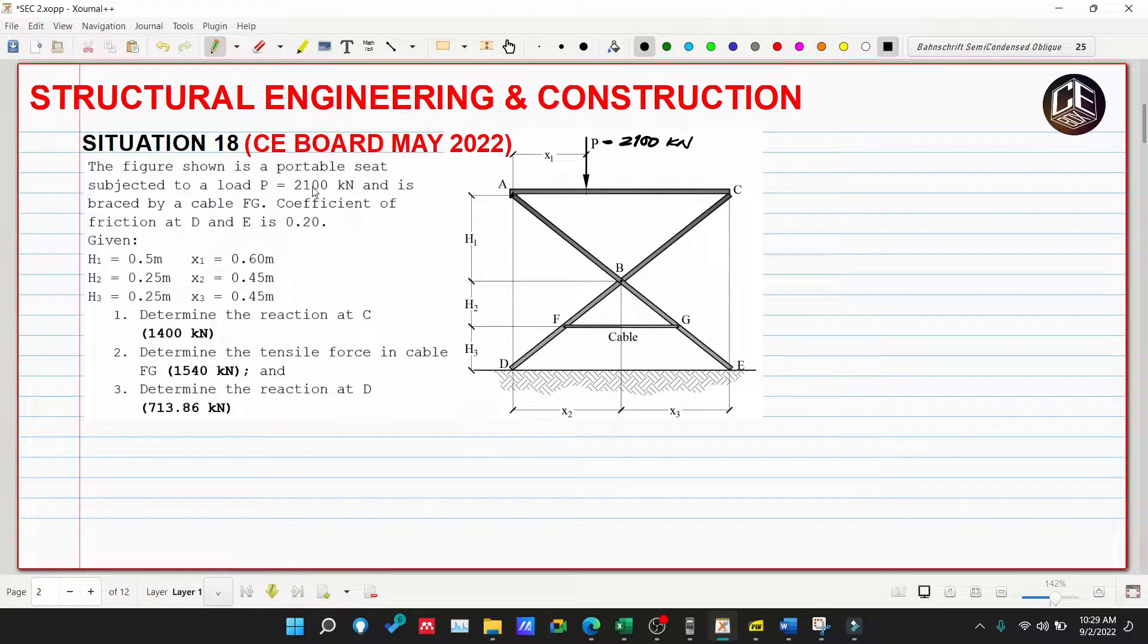The figure shown is a portable seat subjected to a load P which is equivalent to 2100 kN and is braced by a cable FG. Coefficient of friction at D and E is 0.20. Given: h1 is 0.5 meters, h2 is 0.25, h3 is 0.25, x1 is 0.60, and x2 and x3 are both 0.45 meters.